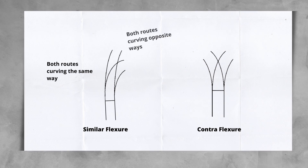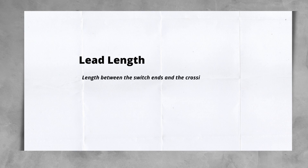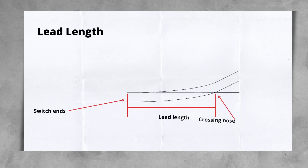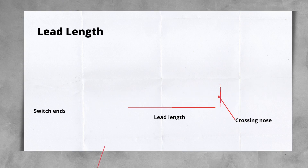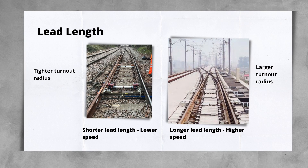When it comes to turnouts, you may hear the term lead length. This refers to the length between the switch ends and the crossing nose. This is an important dimension as it determines the size of the layout — critical when working with fixed geographical boundaries — but it also determines the speed trains can pass over the turnout. The longer or greater the lead length, the higher the speed allowed, due to the fact that as the lead length increases, the radii of the turnout also increases. There is an inherent link between allowable speed and curved radii.